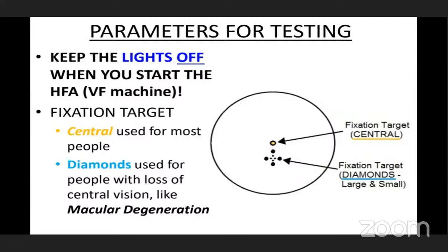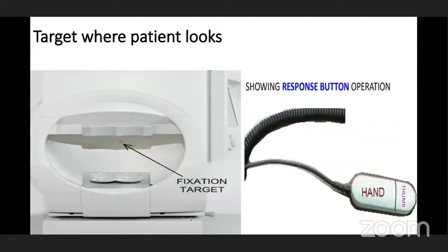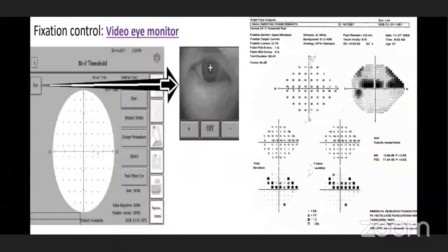The diamond fixation targets are used when there is any loss of central vision, such as macular degeneration. The patient looks at the fixation target and presses the response button whenever they see a light stimulus. The patient should be instructed to view the fixation target and not to look away from it at any point during the test.